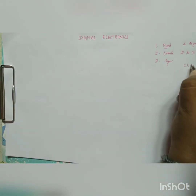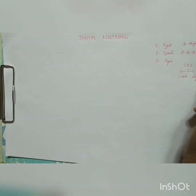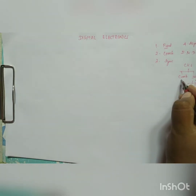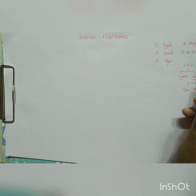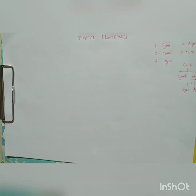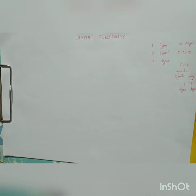Circuits are classified as combinational circuit and sequential circuit. Sequential circuit is again classified as synchronous sequential and asynchronous sequential circuit. The difference between combinational and sequential: if it is a combinational circuit, the present output depends only on the present input. If it is a sequential circuit, the present output depends on the present input as well as past history.